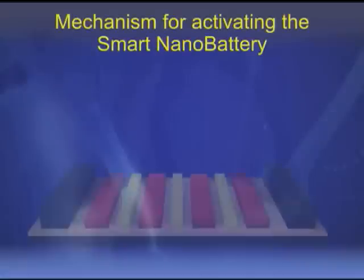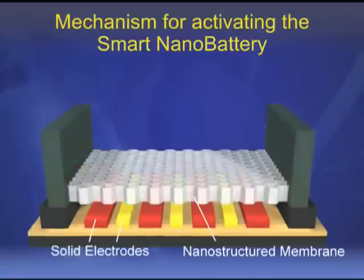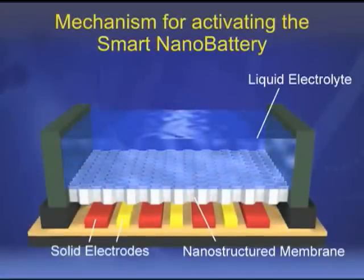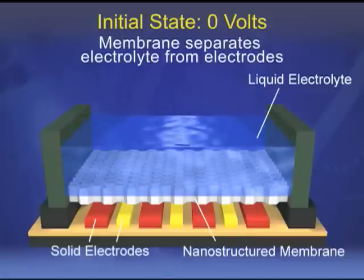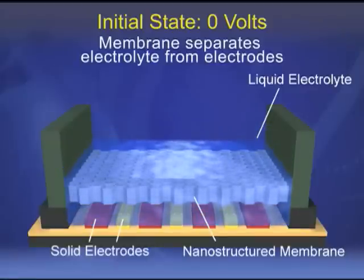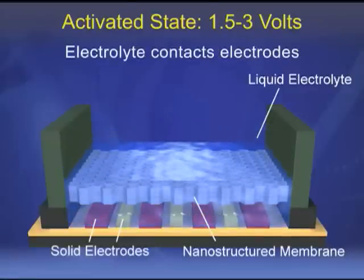Prior to user activation, the liquid electrolyte is kept separate from the electrodes. In this dormant state, no voltage is generated and no power is lost to battery self-discharge. This gives the battery a potentially infinite shelf life. Once the battery has been activated, the electrolyte passes through the membrane and voltage is generated.